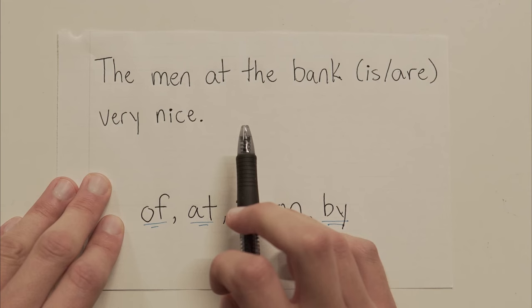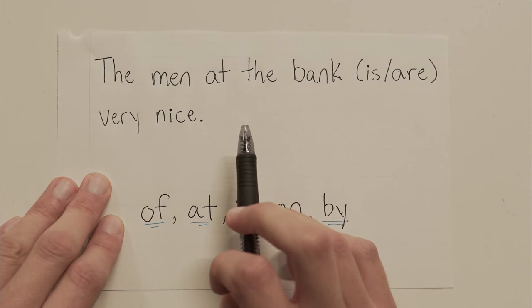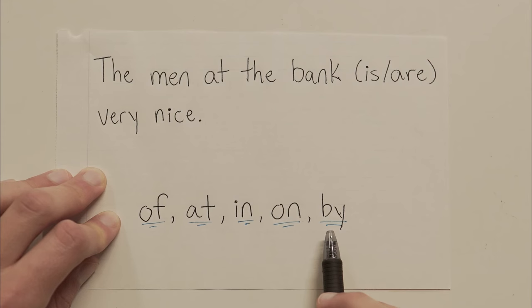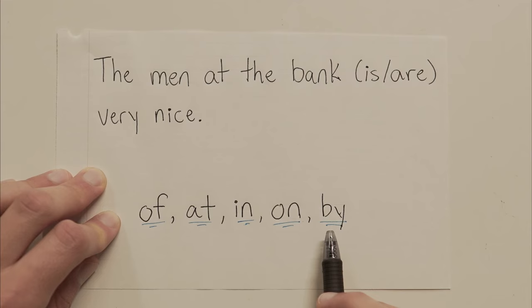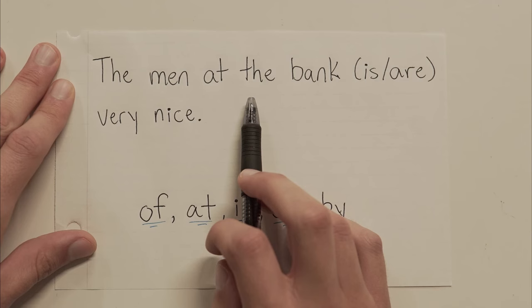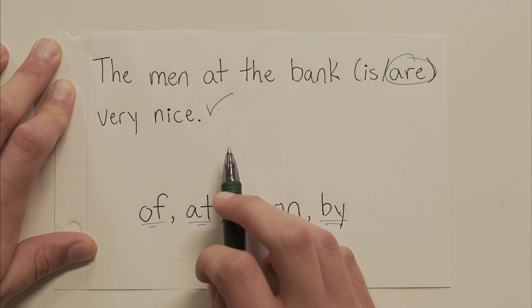Couple more. The men at the bank is very nice, or the men at the bank are very nice. But wait a minute, I don't see an of phrase here. Well, guess what? Not all of these prepositional phrases, these extra filler phrases, begin with the word of. It might be at. It might be in. It might be on. It might be by. There are dozens and dozens of prepositions out there, and I would encourage you to go look some of them up on your own. But regardless, this at the bank phrase is one of those phrases. It is extra. It is filler. Our real sentence here is, the men are very nice. And that's what I should have. The men at the bank are very nice.